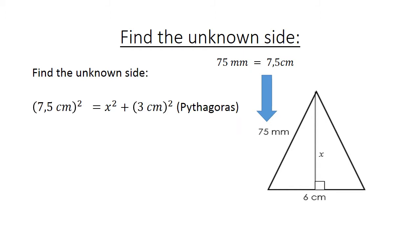Find the unknown side. 75 mm equals 7.5 cm. You have to use the same units. You cannot calculate with millimeters and centimeters. 7.5 cm squared equals x squared plus 3 cm squared. The reason? Pythagoras.